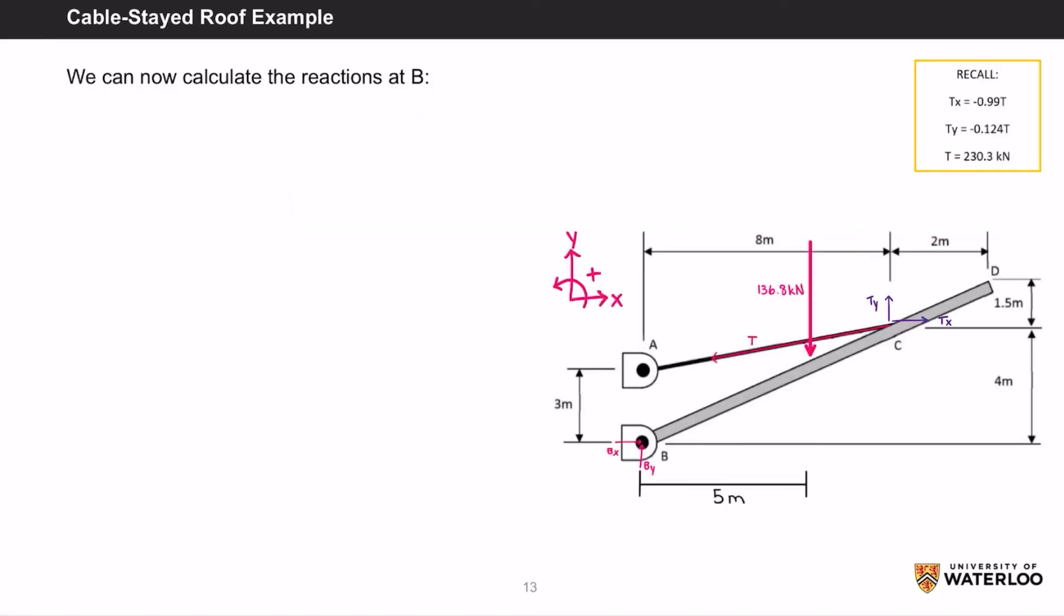Now we can use the remaining equilibrium equations to solve for Bx and By. The net force in the x direction is equal to 0, which equals negative 0.99t plus Bx. Since T equals 230.3 kN, we get Bx equals 228 kN.